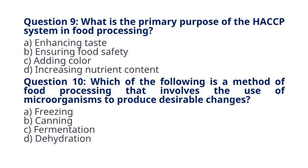Question 10. Which of the following is a method of food processing that involves the use of microorganisms to produce desirable changes? A. Freezing B. Canning C. Fermentation D. Dehydration. The correct answer to question 10 is option C. Fermentation. Explanation: fermentation is a process in which microorganisms, such as bacteria and yeast, are used to produce desirable changes in food, such as the production of yogurt or sauerkraut.